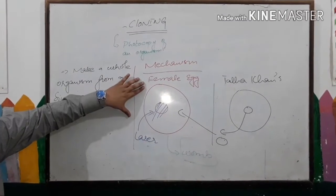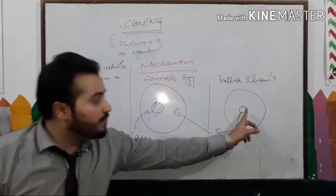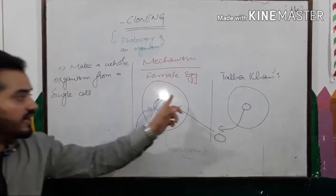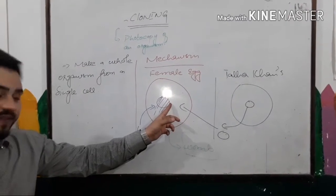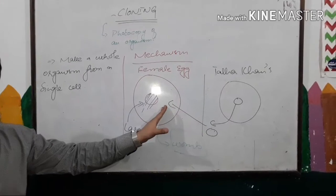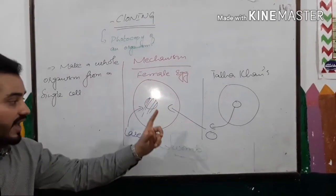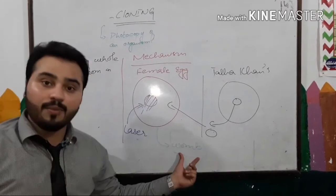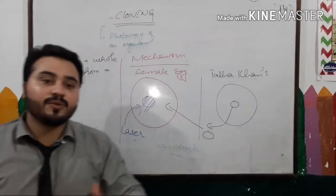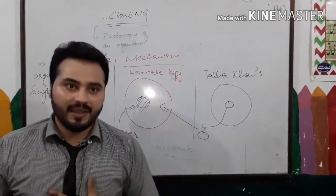To summarize: take a female egg cell and destroy its nucleus. Remove the nucleus of my cell and put it into the female egg cell. Then put that transplanted cell into the womb of a female, and the female produces a baby that will be the photocopy of mine.